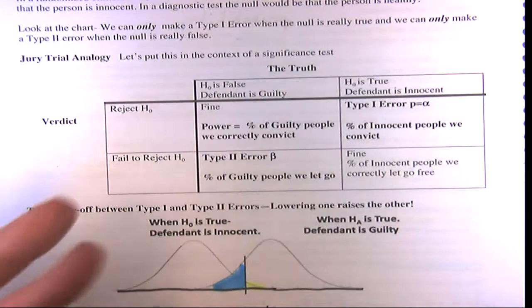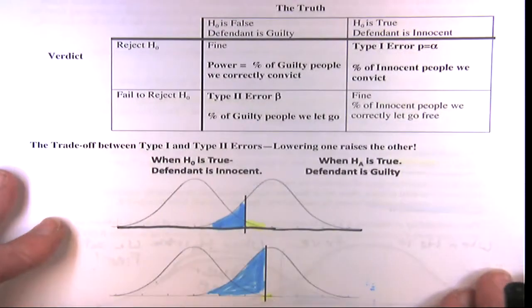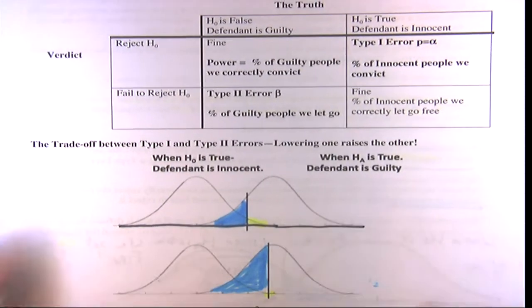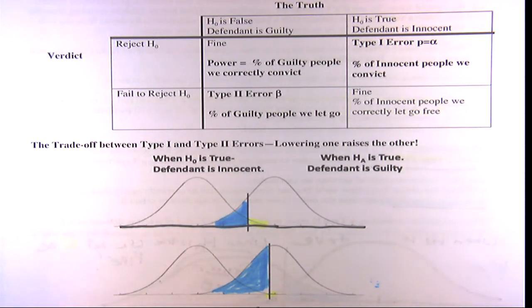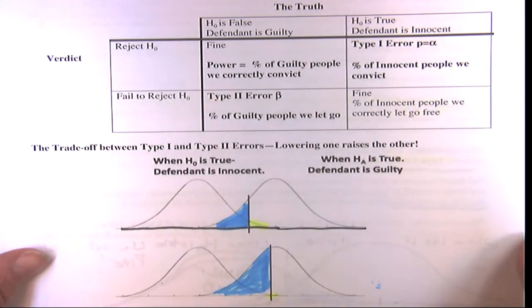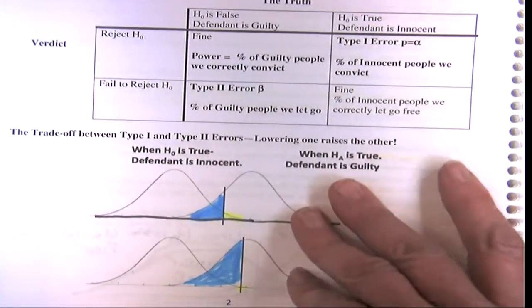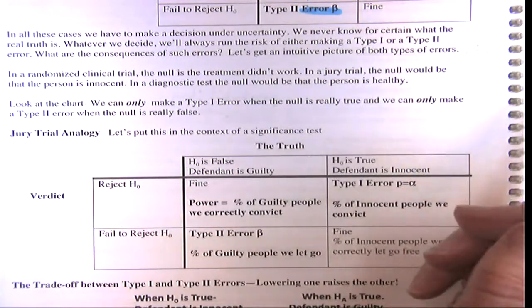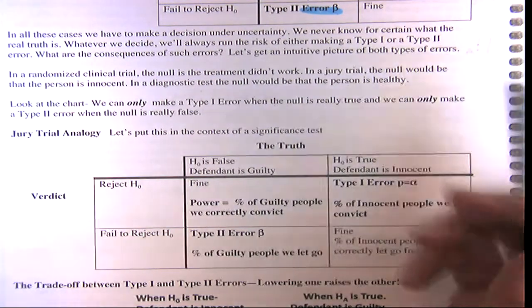The last example we did: we were thinking about whether somebody's guilty or not. The null is the person's innocent — the usual null, the dull thing — and the alternative was they're guilty. So there's just one alternative. Or in the case of a diagnostic test, like your first homework, the null would be no disease.